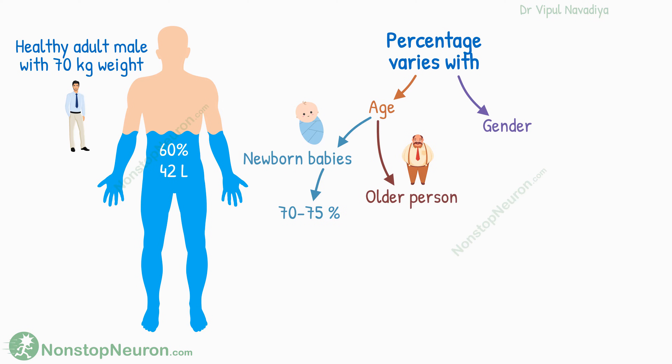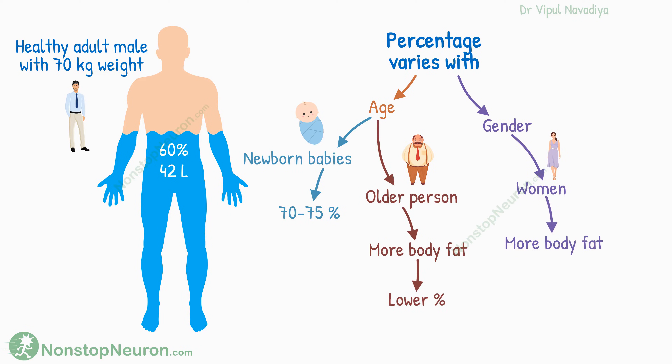On the other hand, in old age this percentage decreases even below 60%, because of the increased percentage of fat. Even adult women have a greater percentage of fat than men, so their total body water averages about 50% of body weight. Similarly, in adult males who are obese, the percentage of water is less than in men who are not obese.